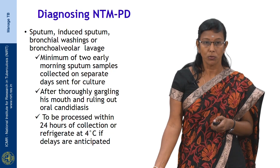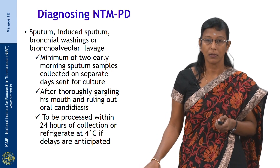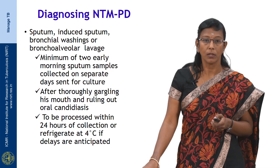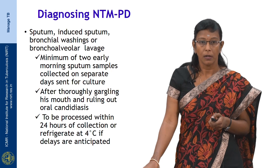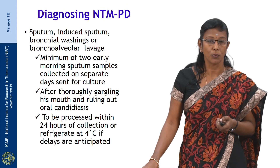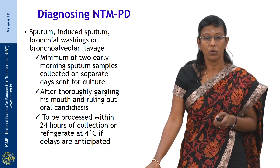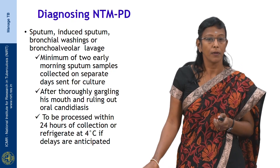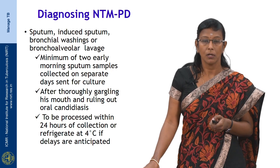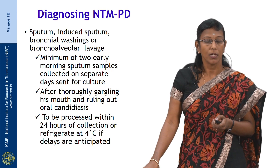The sputum may be induced, and you need a minimum of two early morning sputum samples collected on two separate days and sent for culture. Sputum collection should be done after thoroughly gargling the mouth and ruling out oral candidiasis — this is especially important in immunocompromised patients. The sample collected should be processed within 24 hours of collection; if delay is anticipated, refrigerate the sputum sample at 4 degrees Celsius.